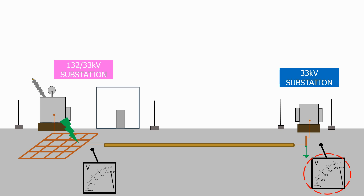The problem is that this grounding grid will not be designed to carry such a high voltage level, and anyone standing inside the 33kV substation or touching the metal enclosures of the equipment will be in extreme danger due to the touch and step potentials.